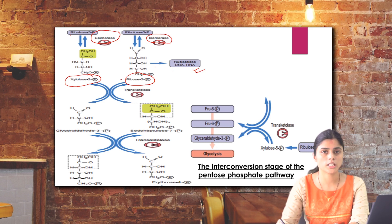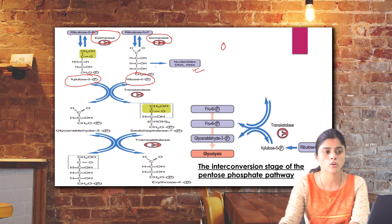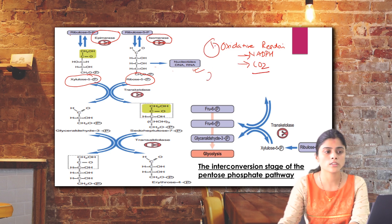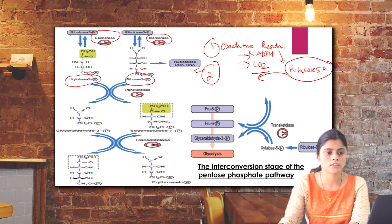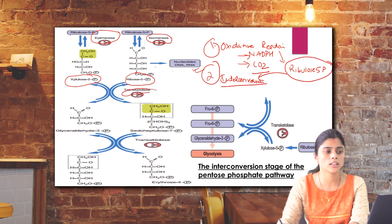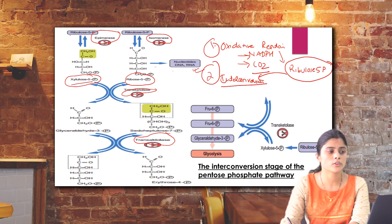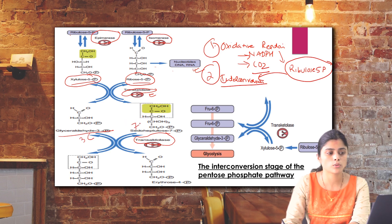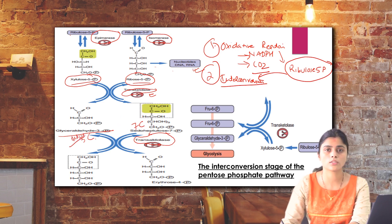The second phase of the pentose phosphate pathway is the interconversion phase. The first oxidative phase produced ribulose 5-phosphate, a pentose sugar. This ribulose 5-phosphate is interconverted by the enzymes transketolase and transaldolase: transketolase acts on keto sugars and transaldolase acts on aldose sugars. Xylulose 5-phosphate and ribose 5-phosphate are acted upon by transketolase to form glyceraldehyde 3-phosphate (3-carbon) and sedoheptulose 7-phosphate.